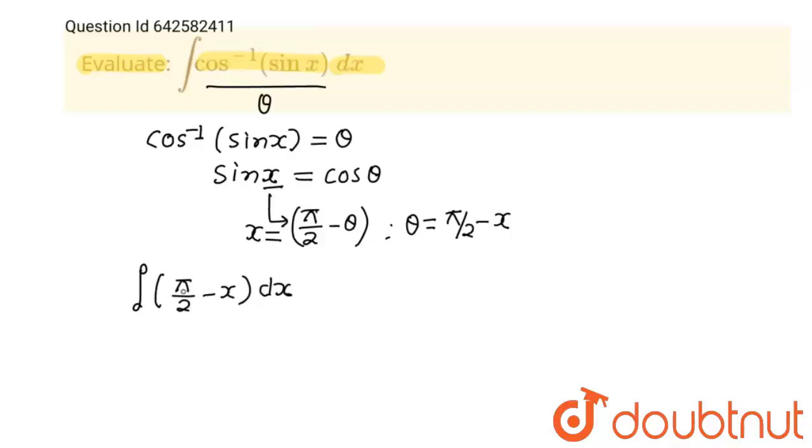Now integration of pi by 2 which is constant is pi by 2 x minus integration of x is x square by 2 plus c and this is our final answer.